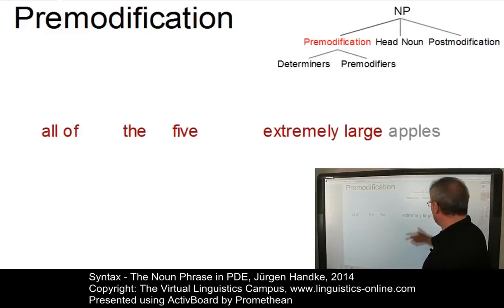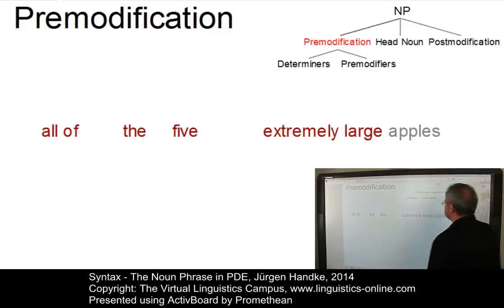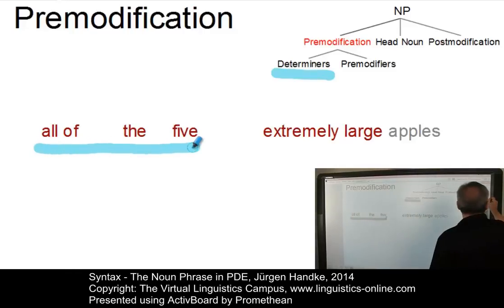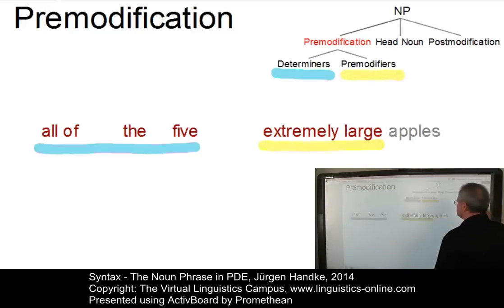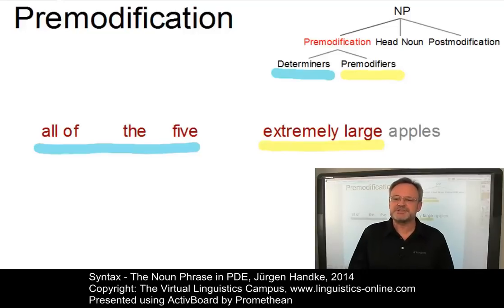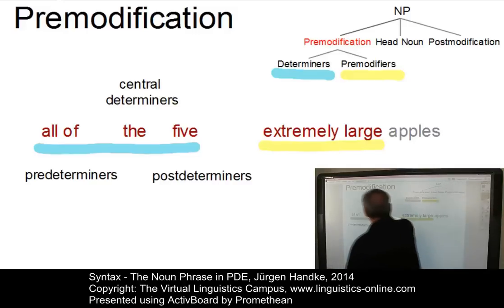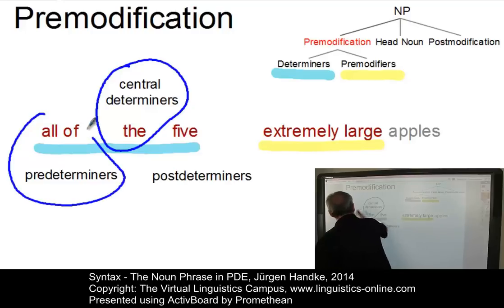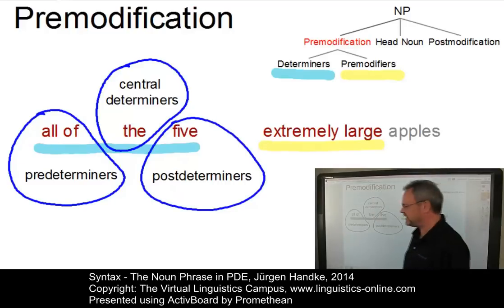Here is an example: 'All of the five extremely large apples.' This is a noun phrase where we can identify a set of determiners — for example, 'all of the five' — and pre-modifiers — for example, 'extremely large'. And 'apples' is, of course, the head. In looking at the determiners, three classes of determiners are generally distinguished: central determiners, such as 'the'; predeterminers, here the example 'all of'; and post-determiners — in our case, the element 'five'.